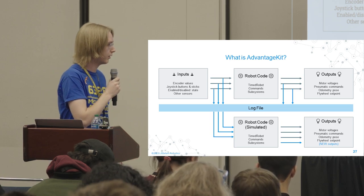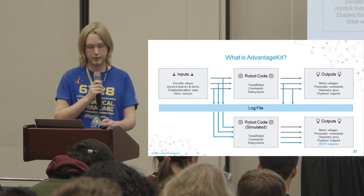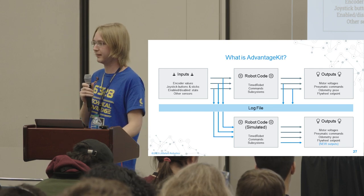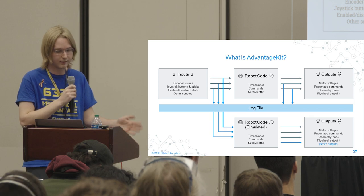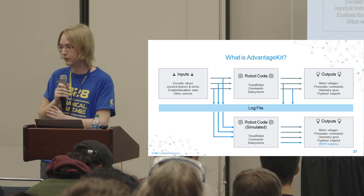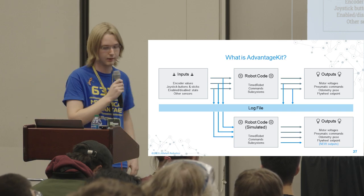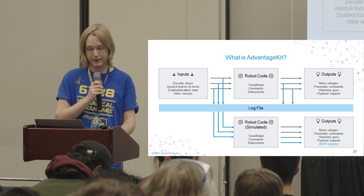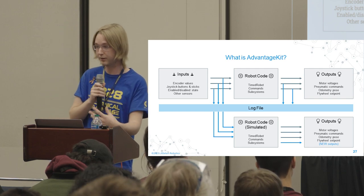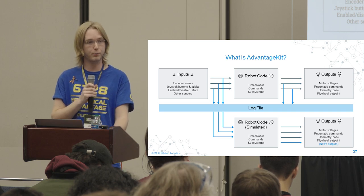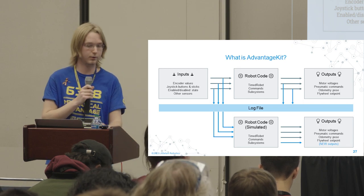Why log every input? If we run the robot code again in a simulator and feed it the inputs from the log file, the code will do exactly the same thing as it did on the real robot. If the same code receives the same inputs in the same order, it will always produce the same outputs. This means we can measure all outputs from the simulated code and are guaranteed they match what happened on the real robot.